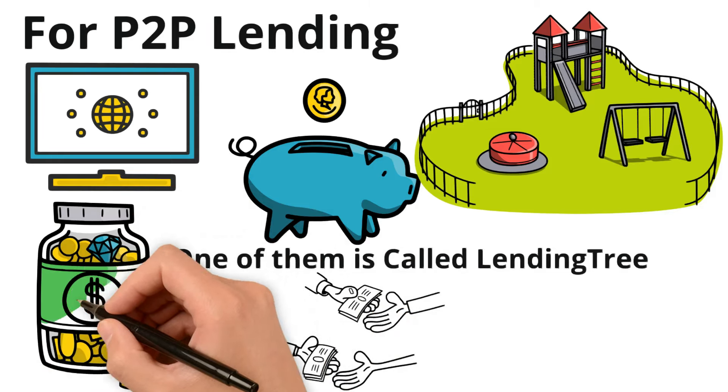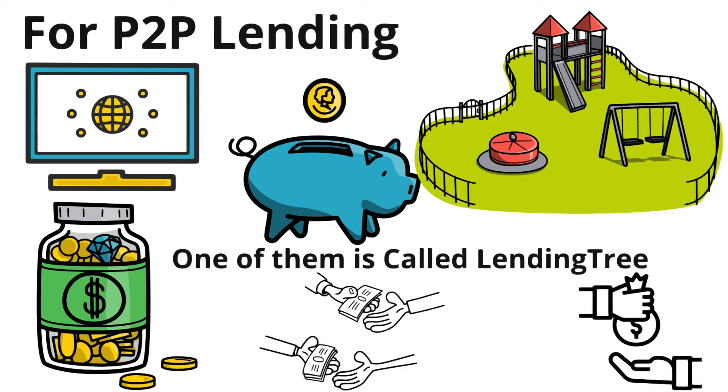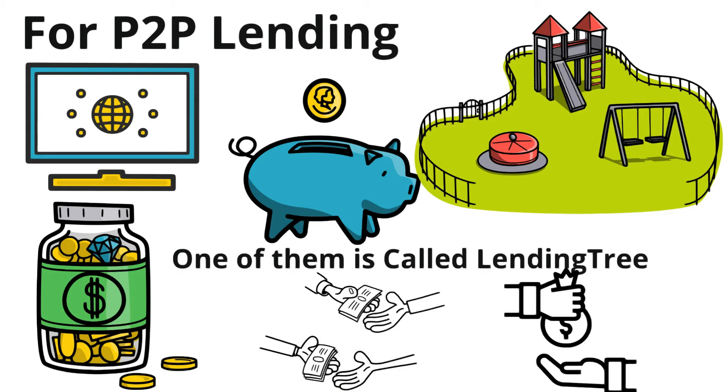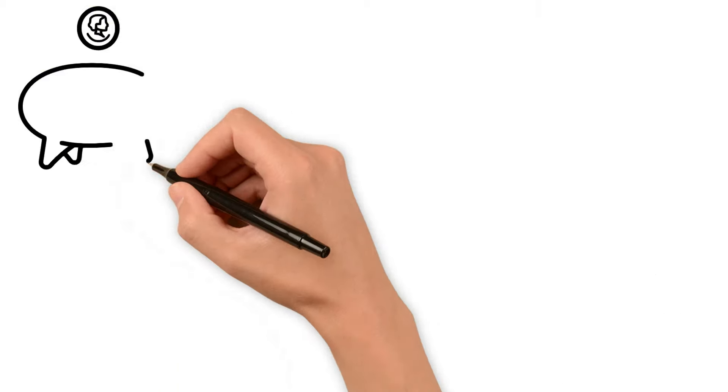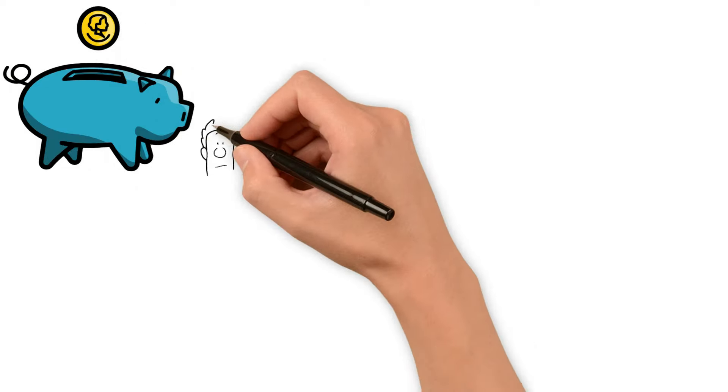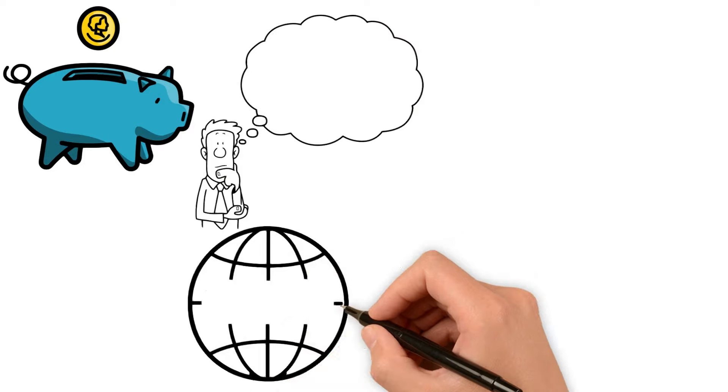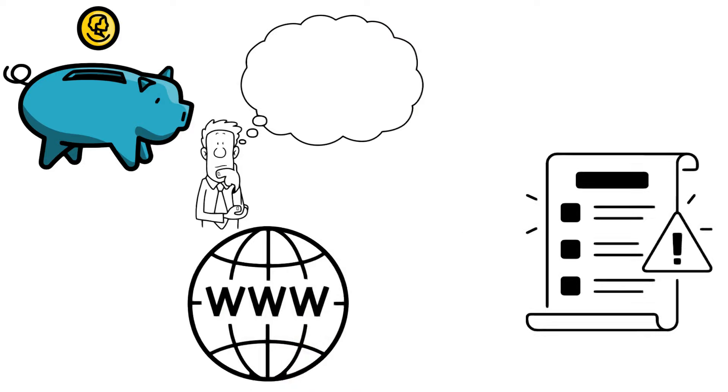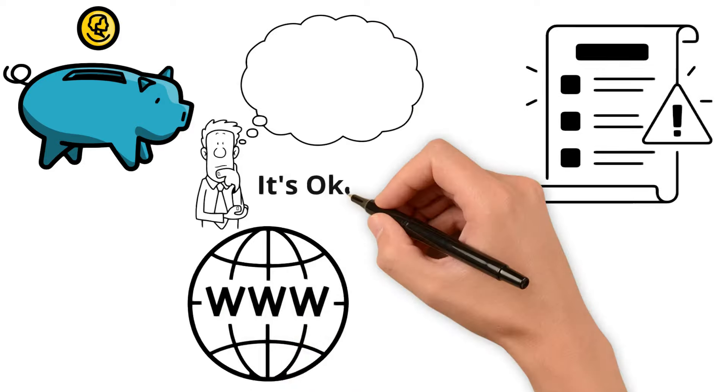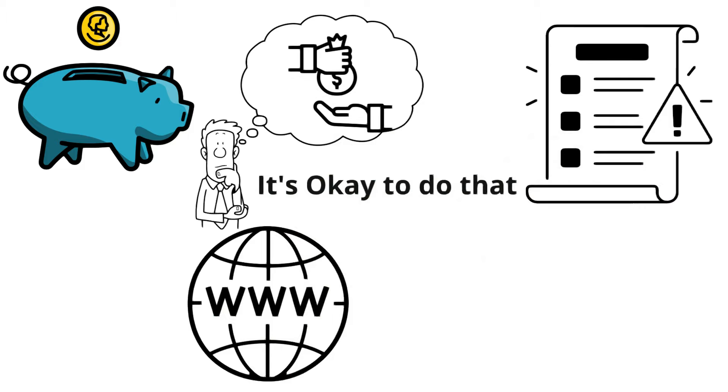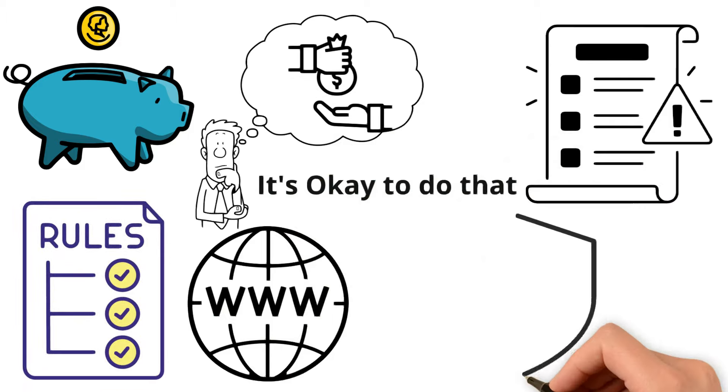If you want to lend some of your allowance or birthday money you can go on Lending Tree, see who needs a little extra cash, and lend it to them. They'll pay you back with a bit extra for your piggy bank. Just remember, if you're thinking about lending money directly to someone without using a website, you should check the rules in your place to make sure it's okay to do that.